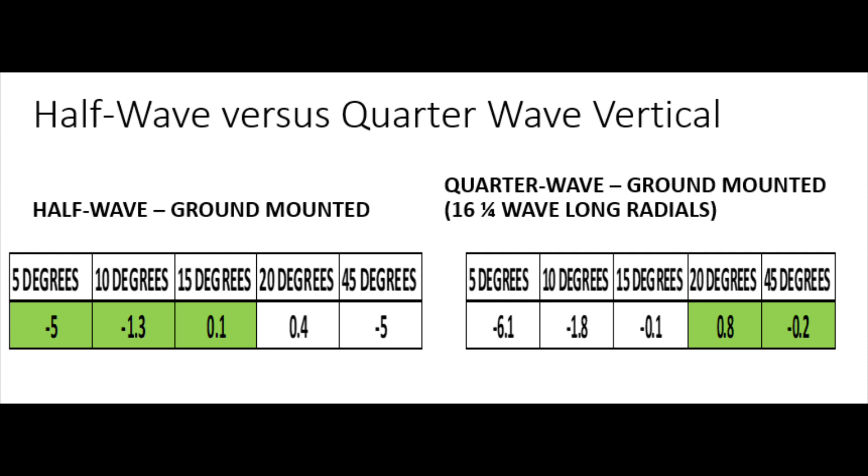Now for the quarter wave, I've chosen to feed it with, or to have, 16 quarter wave long radials. So for the 10-metre antenna, that's 16 two-and-a-half metre radials. That's 40 metres of ground radials on the ground, because it's a ground mounted quarter wave. Now, you can see there that I've looked at each antenna in terms of its gain for different angles of elevation. So for example, we're looking at 5, 10, 15, 20, and 45 degrees for both.